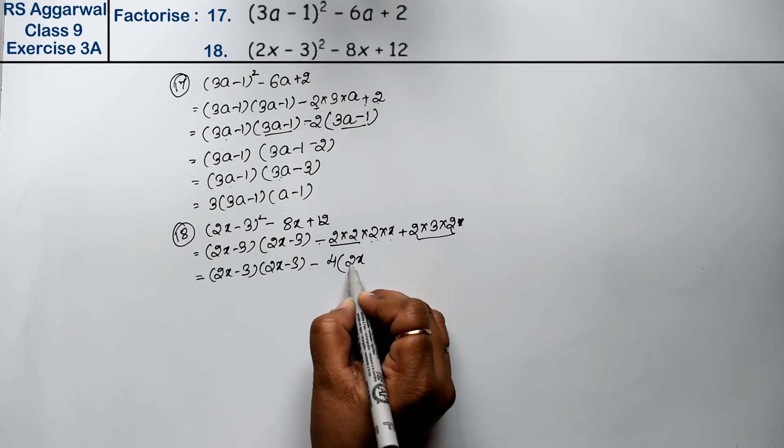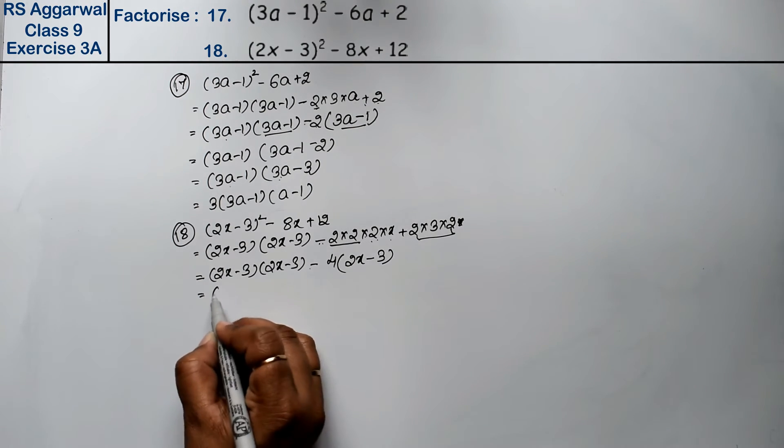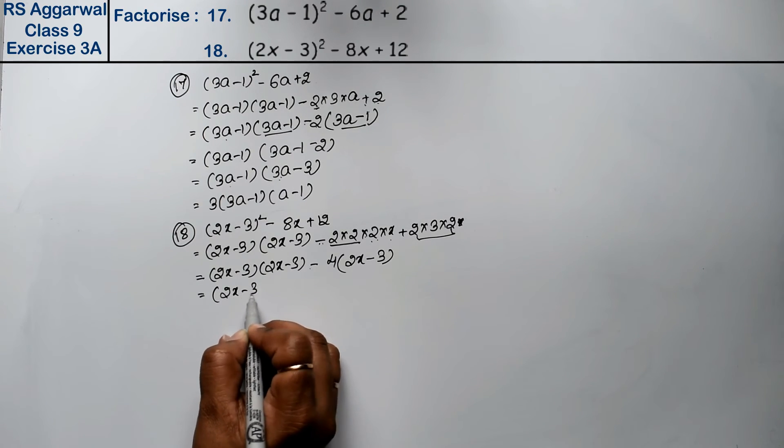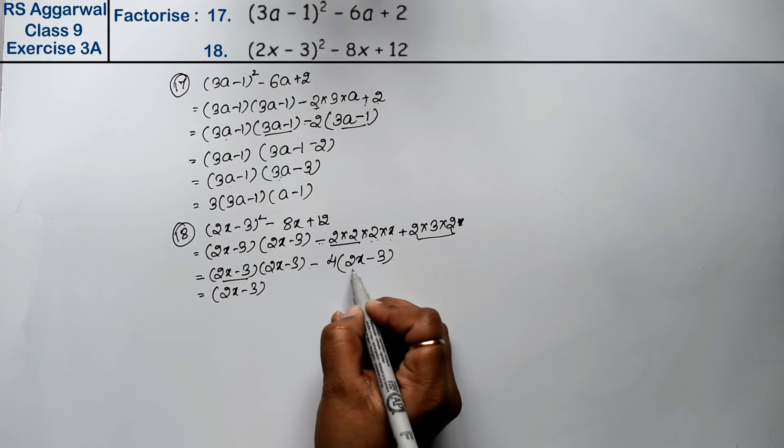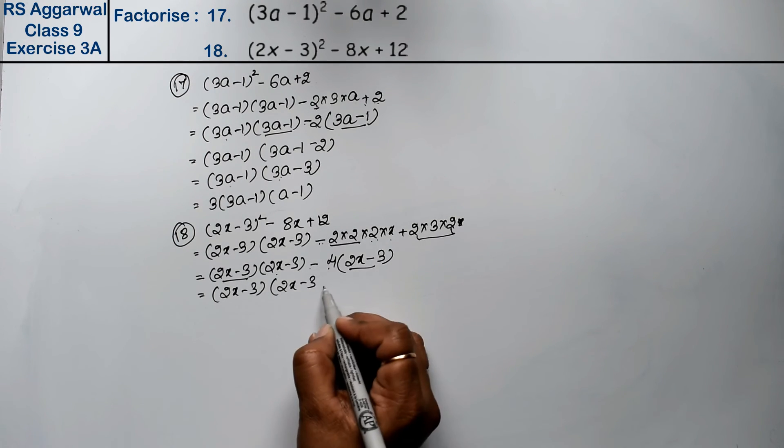The one inside was minus, so it becomes plus. This one was plus, so it becomes minus 3. Now from (2x - 3), both become common. Taking one outside, this becomes (2x - 3), and this becomes minus 4.